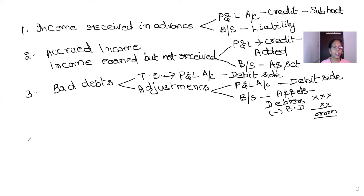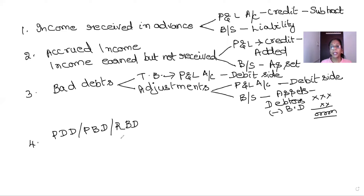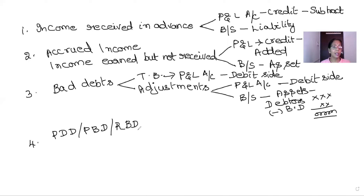Next is Provision for Doubtful Debts (PDD), also called PBD or Reserve for Bad and Doubtful Debts. The businessman reserves a certain portion of profit towards the contingency of meeting bad debts in the future — a conservative approach. PDD may be given both in the trial balance and in the adjustments. When given in the trial balance, the money amount is mentioned; when given in the adjustments, it is expressed as a percentage such as 5% or 10% on the debtors' value.